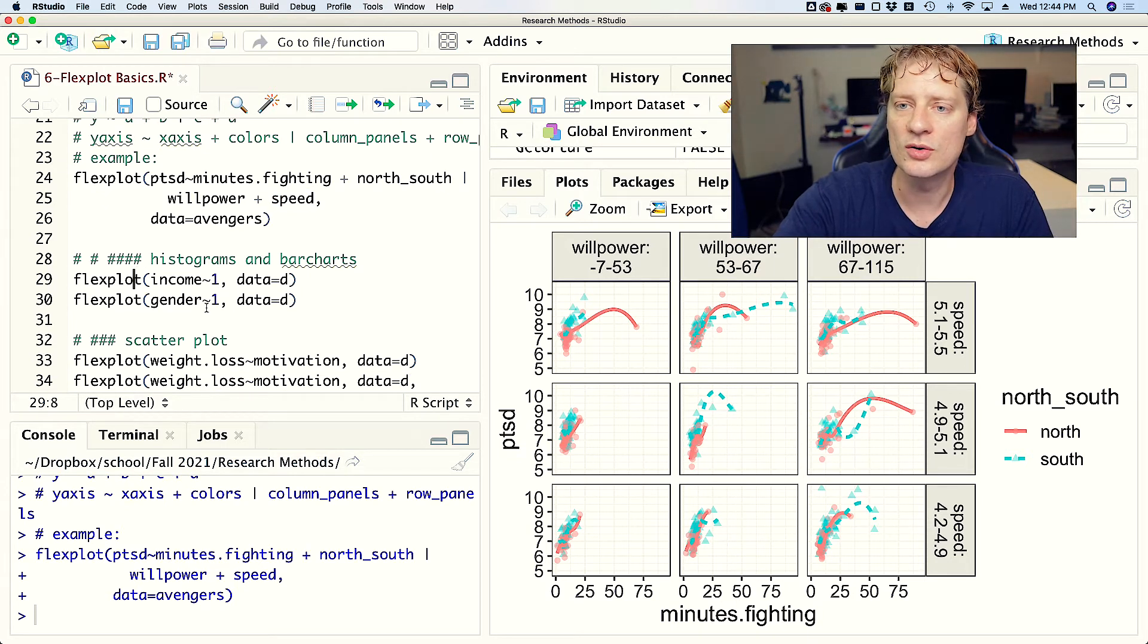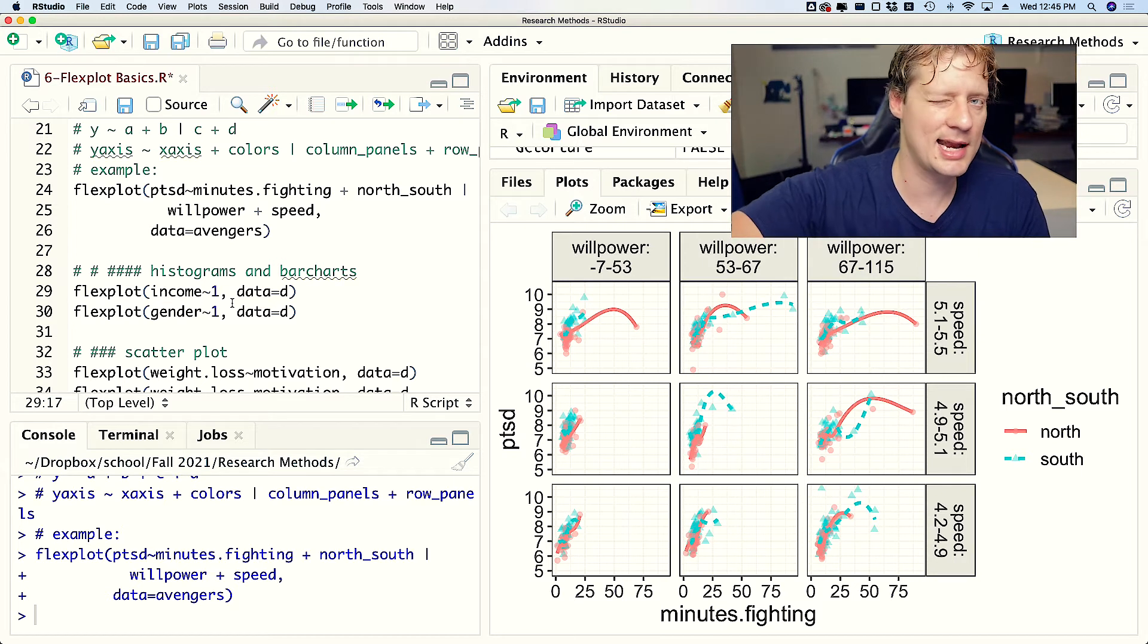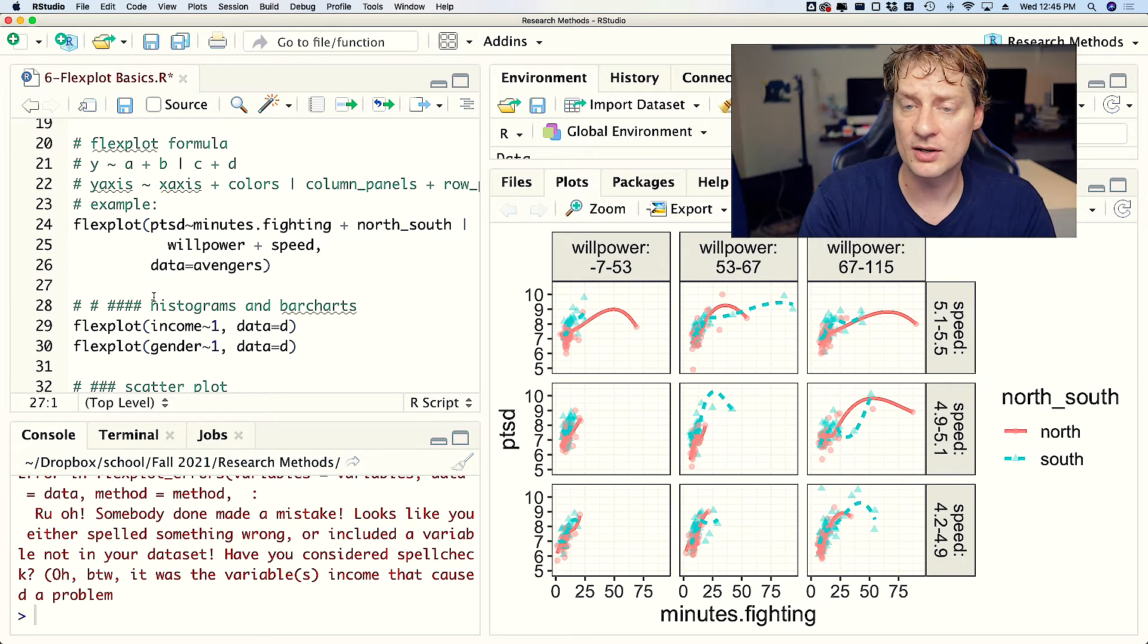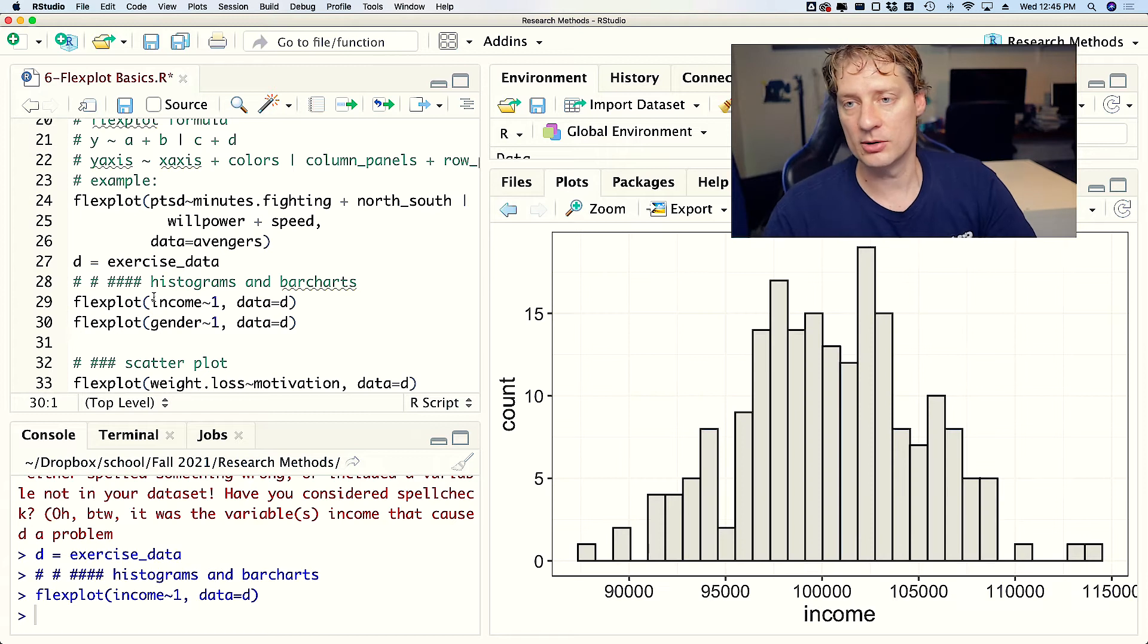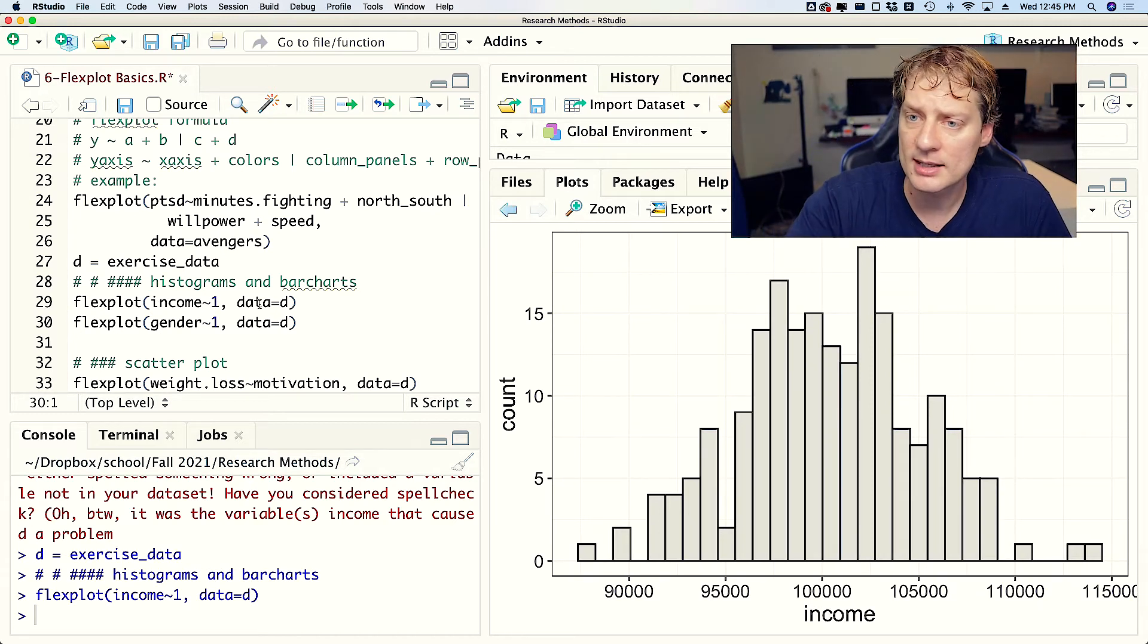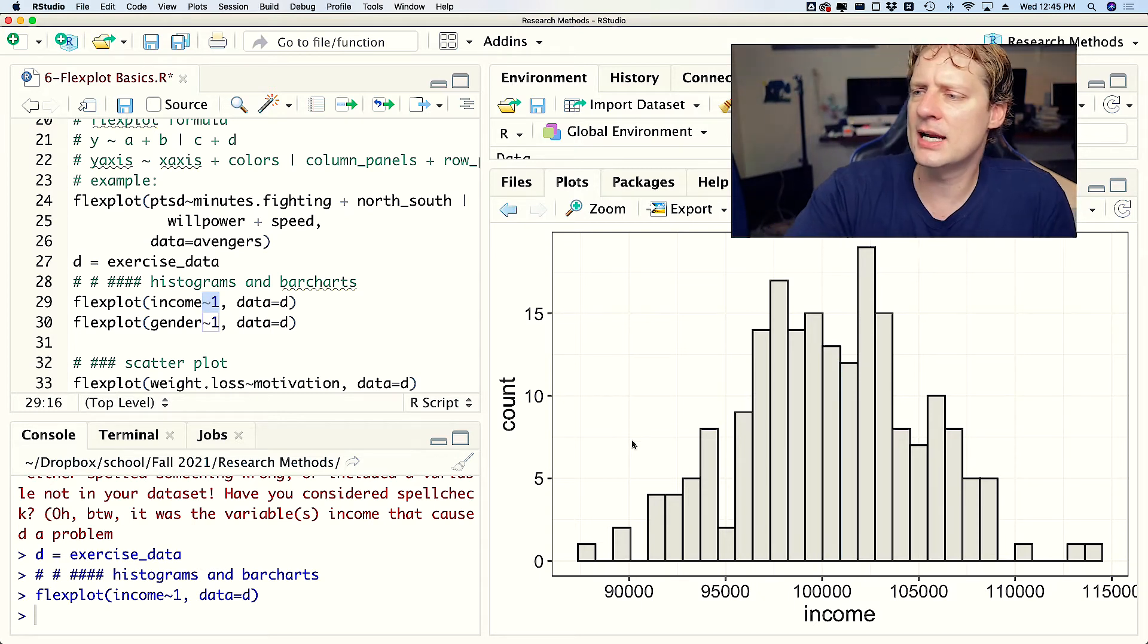It's a very simple formula with one minor modification. Instead of saying tilde and then a variable name, you can just put the number one, and that is your wink to Flexplot saying hey, I want a histogram or hey, I want a bar chart. So income tilde one. What Flexplot is doing in the background is saying, wow, income is a numeric variable, by golly that means I need to do a histogram. And sure enough, it does a histogram, and a mighty fine histogram it is.